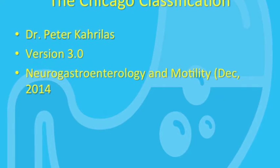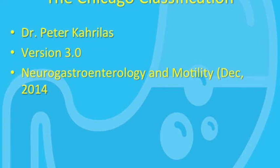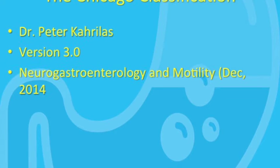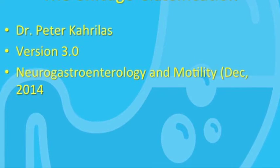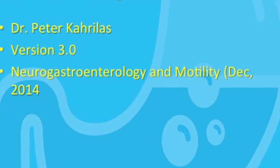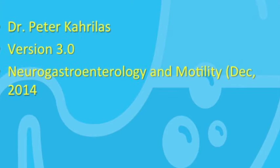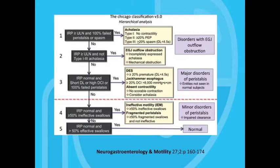The Chicago classification was first developed by Dr. Peter Karoulas and his team at Northwestern University, and it probably represents the most current understanding of esophageal motility disorders. This classification has undergone several updates since 2009, and today I am referring to version 3.0. For a more in-depth description, I would refer the listener to the article by Dr. Karoulas in Neurogastroenterology and Motility in December of 2014. The classification scheme is hierarchical — it goes through a thinking process in five steps that seeks to identify the most serious disorders first, such as achalasia, and classifies disorders according to the three manometry parameters we discussed.